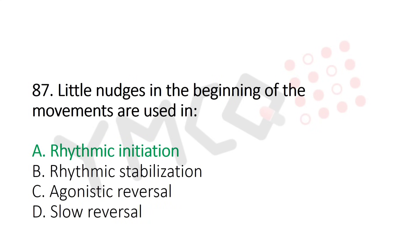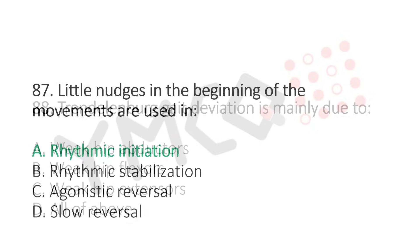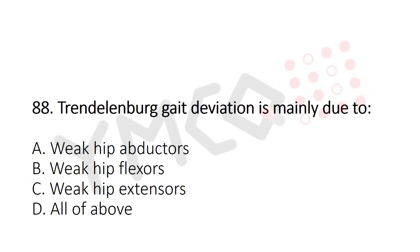Question 88: Trendelenburg gait deviation is mainly due to — option A: weak hip abductors, option B: weak hip flexors, option C: weak hip extensors, option D: all of the above. The answer is option A: weak hip abductors.